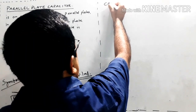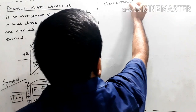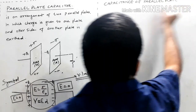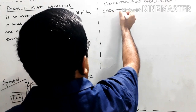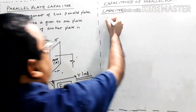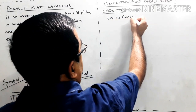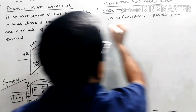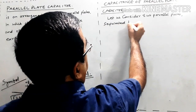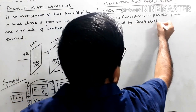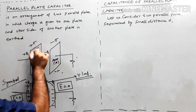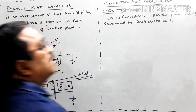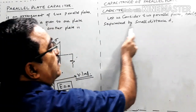Now, capacitance of a parallel plate capacitor. Let us consider two parallel plates of area A, separated by a small distance D.